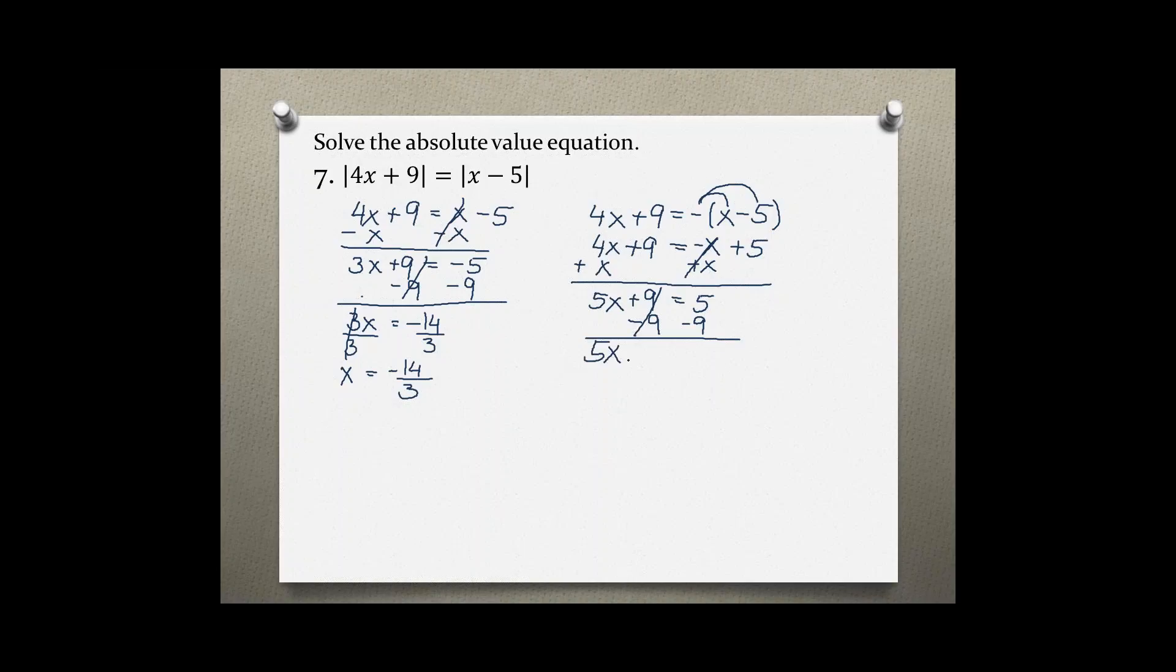Subtracting 9, we get 5x equals negative 4. Dividing by 5, x equals negative 4 over 5 is our second solution.